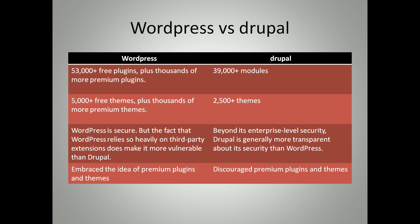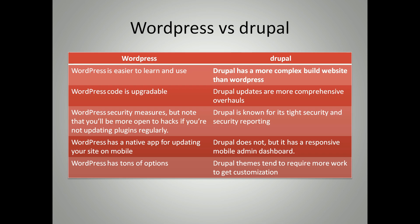WordPress embraces premium plugins and themes, but Drupal discourages them. WordPress is easier to learn and use, while Drupal has a more complex build. WordPress code is upgradable, but Drupal updates are more comprehensive overhauls. On security, WordPress requires regular updates to avoid vulnerability to hacks, while Drupal is known for its tight security and security reporting. WordPress has a native app for updating your site on mobile, while Drupal does not, though it has a responsive mobile admin dashboard. WordPress has many options, but Drupal customizations tend to require more work.